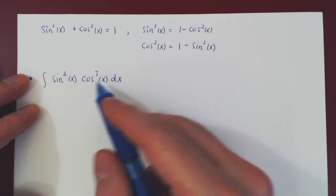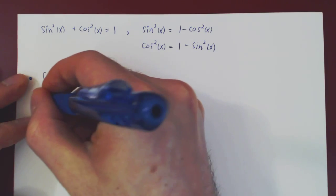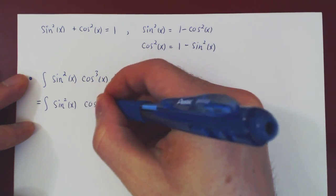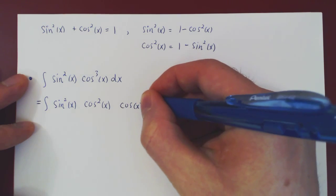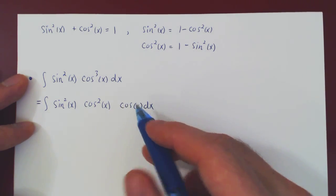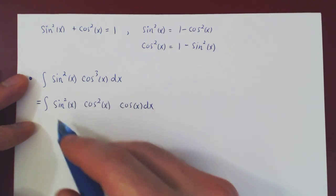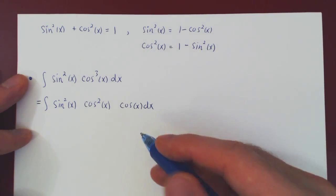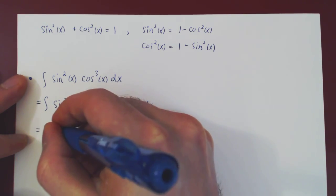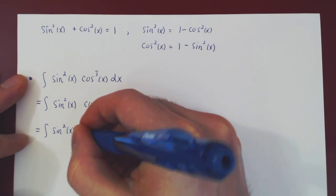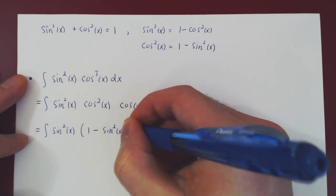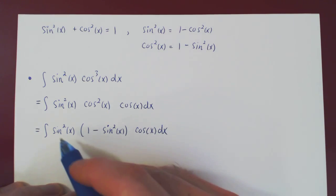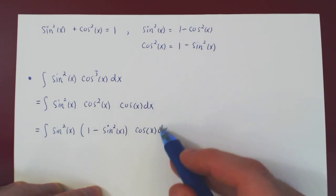Here the odd power is on the cosine, so we factor a cosine. We write sin²(x) · cos²(x) · cos(x) dx. Since the derivative of sin(x) is cos(x), we want the remaining expression in terms of sin(x), so we replace cos²(x) with 1 - sin²(x).